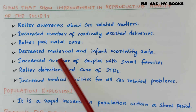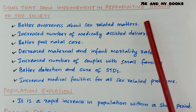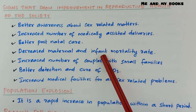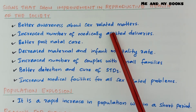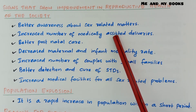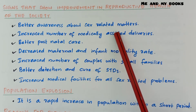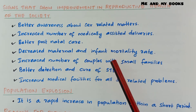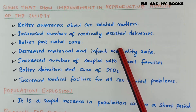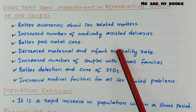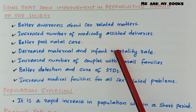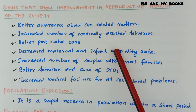Signs that show improvement in reproductive health of the society include: better awareness about sex-related matters; increased number of medically-assisted deliveries; better postnatal care, that is taking care of the baby after delivery; and decreased maternal and infant mortality rate. In olden times there were more cases of maternal and infant mortality because deliveries happened inside the home.